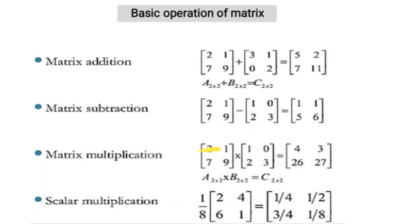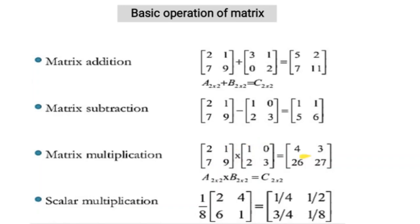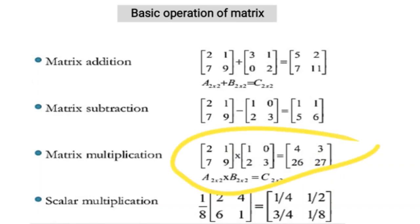For the first row of the first matrix with the second column of the second matrix: 2×0 plus 1×3 equals 3. For the second row of the first matrix with the first column: 7×1 plus 9×2 equals 7 plus 18, which is 25 — not 26, the answer shown is wrong, it should be 25. Similarly, 7×0 plus 9×3 equals 27.